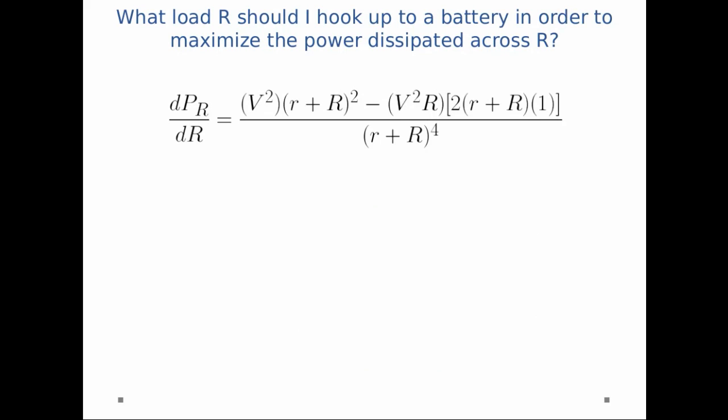So first I'll take the derivative of the power with respect to the load resistance. So all I did here was I use the quotient rule from calculus and I get V squared times r plus R quantity squared, that's the derivative of the top times the bottom, minus V squared R times 2 times r plus R times 1, that's the top times the derivative of the bottom, divided by the bottom squared.